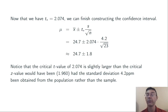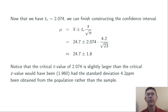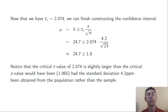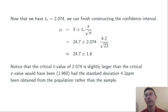Notice that the critical t value here, 2.074, is a tiny bit larger than the critical z-score would have been for the same level of confidence, which would have been 1.960. This makes sense: because we don't know the population standard deviation, there's a little bit more uncertainty, so our confidence interval has to be a little bit wider.